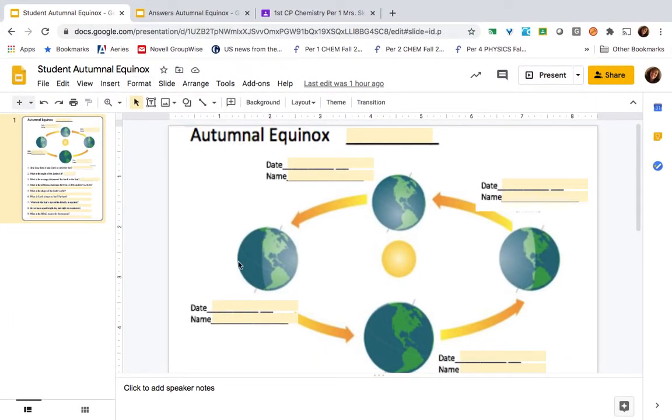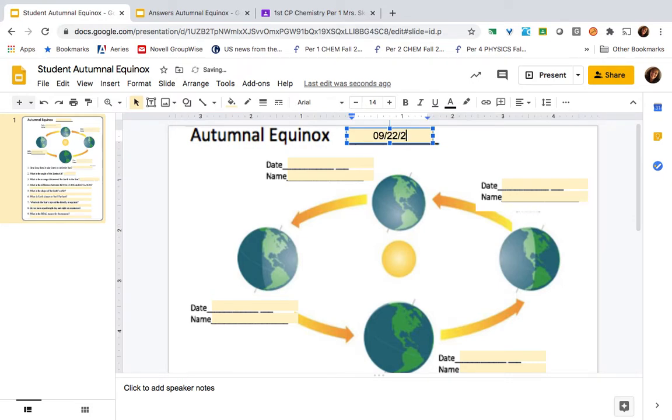So just follow along as we go through this and hopefully it will make sense to you. So today of course is September 22nd, 2020, and it is a special day. You obviously know that the Earth spins around its axis. When your side of the Earth is facing the Sun, you have daytime. When your side of the Earth is not facing the Sun, you have nighttime.